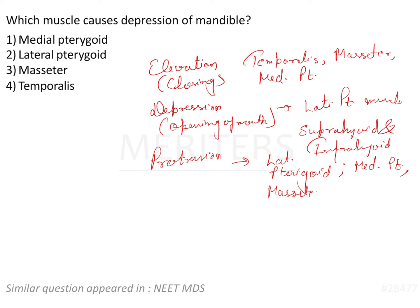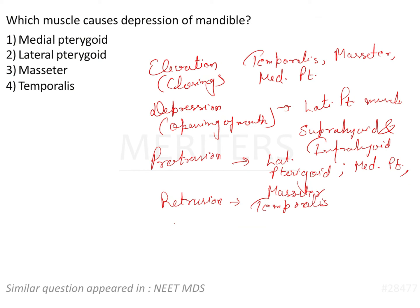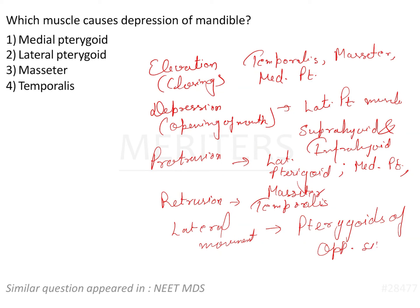Retraction is performed mainly by the temporalis muscle, as we saw in the figure. Then there is lateral movement, which generally occurs during grinding and chewing. This lateral movement is done by the pterygoids of the opposite side — that means the medial and lateral pterygoid — but they act towards the opposite direction.